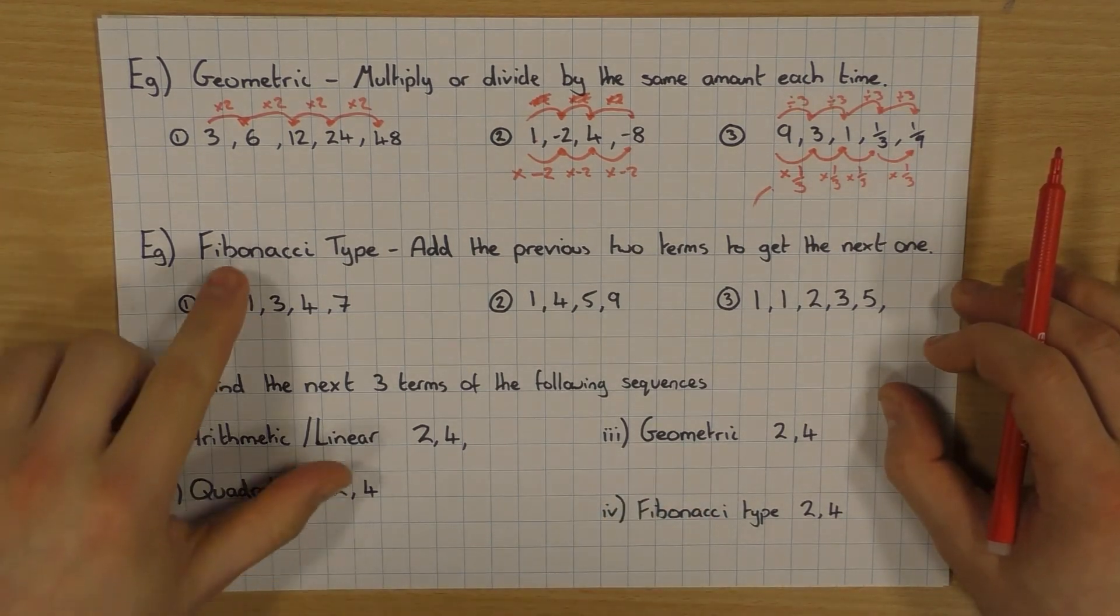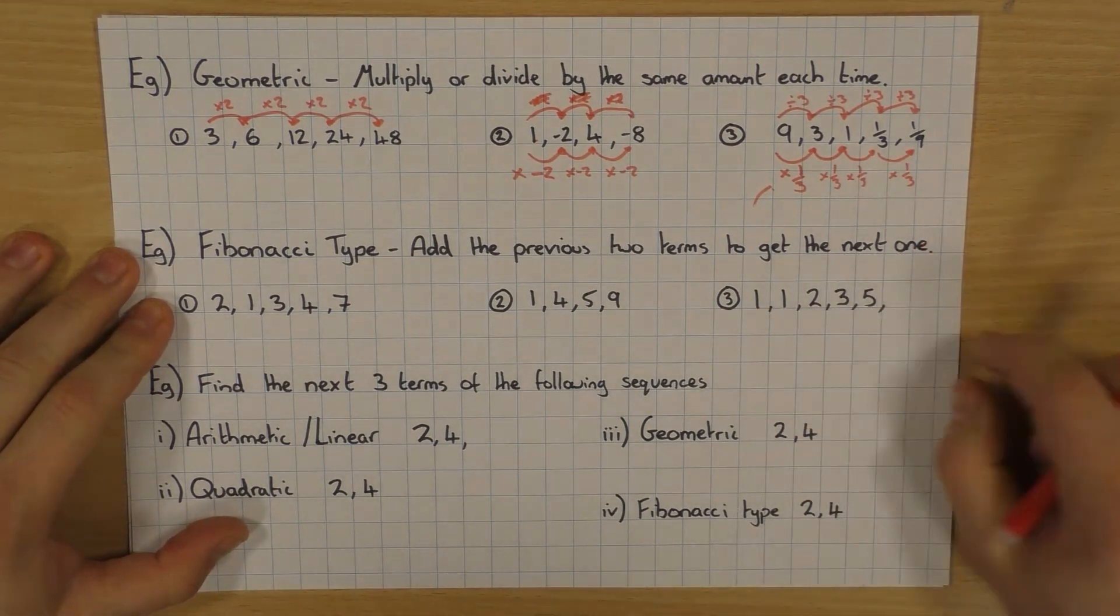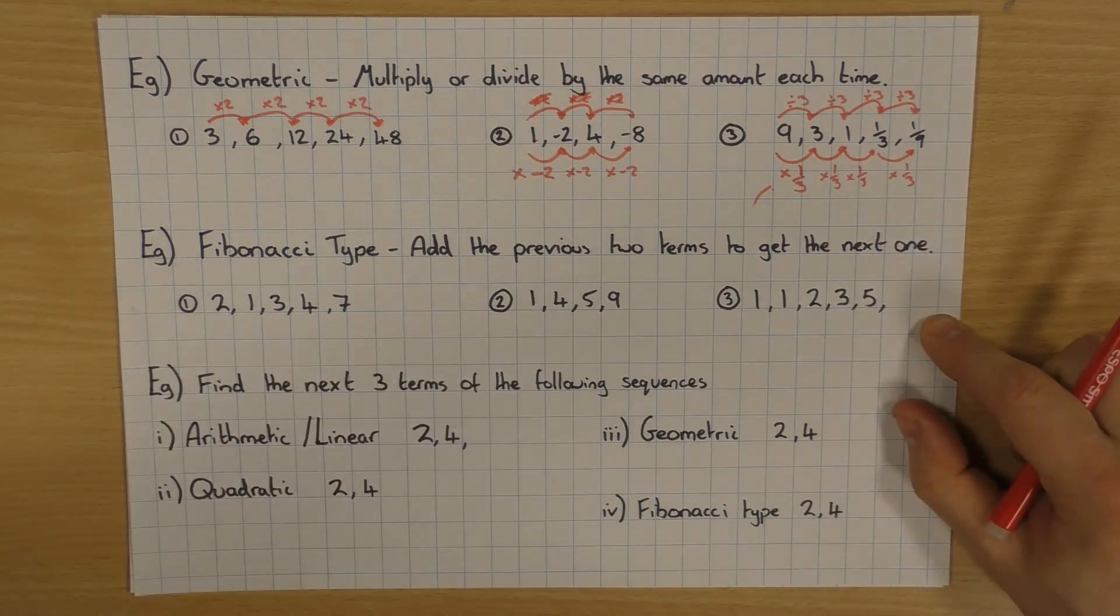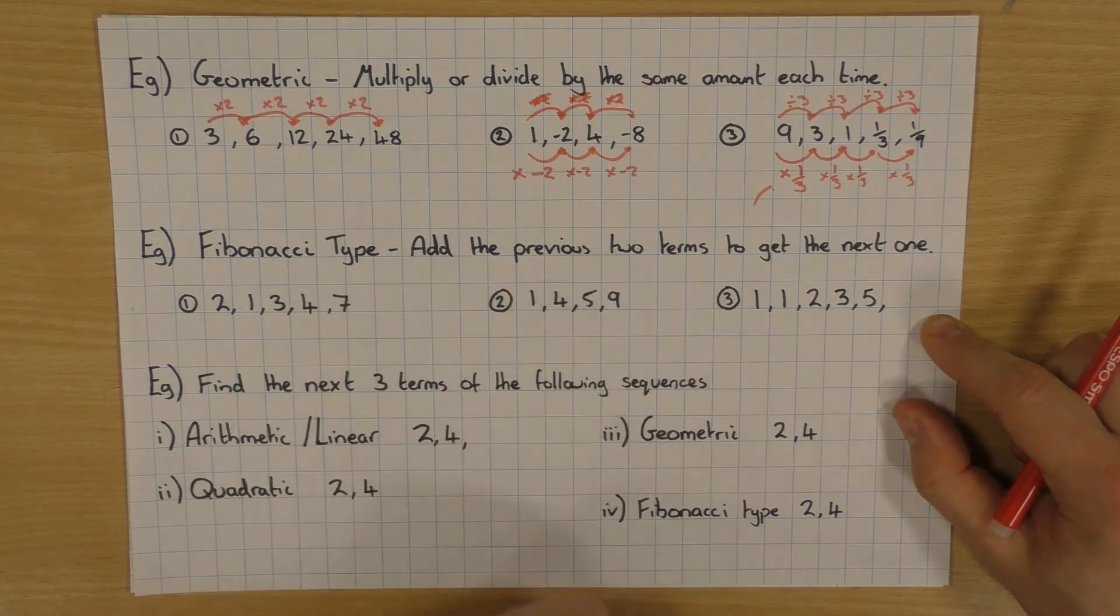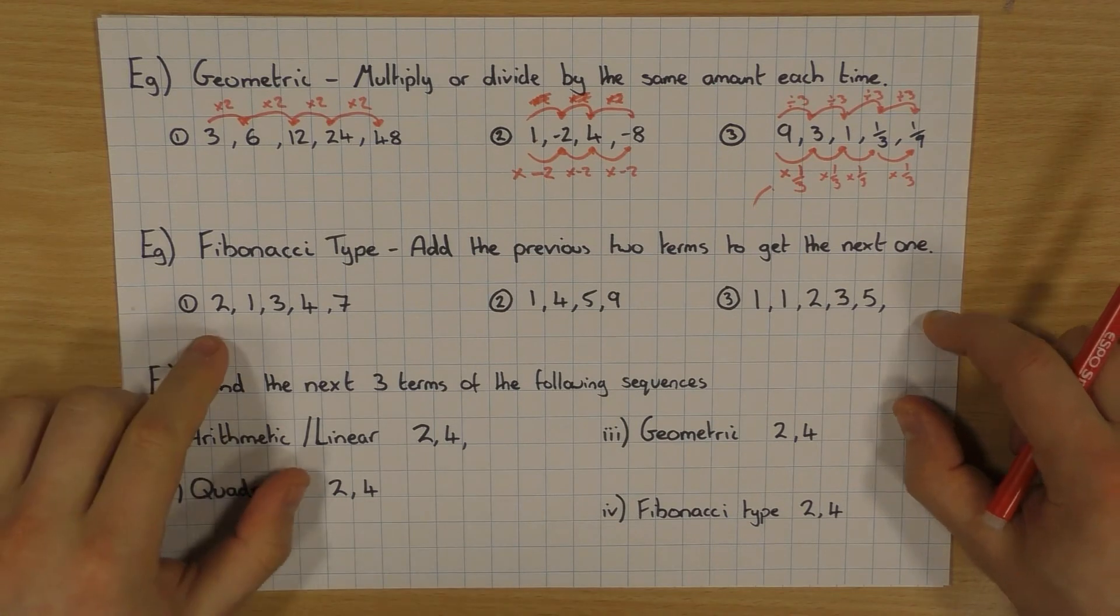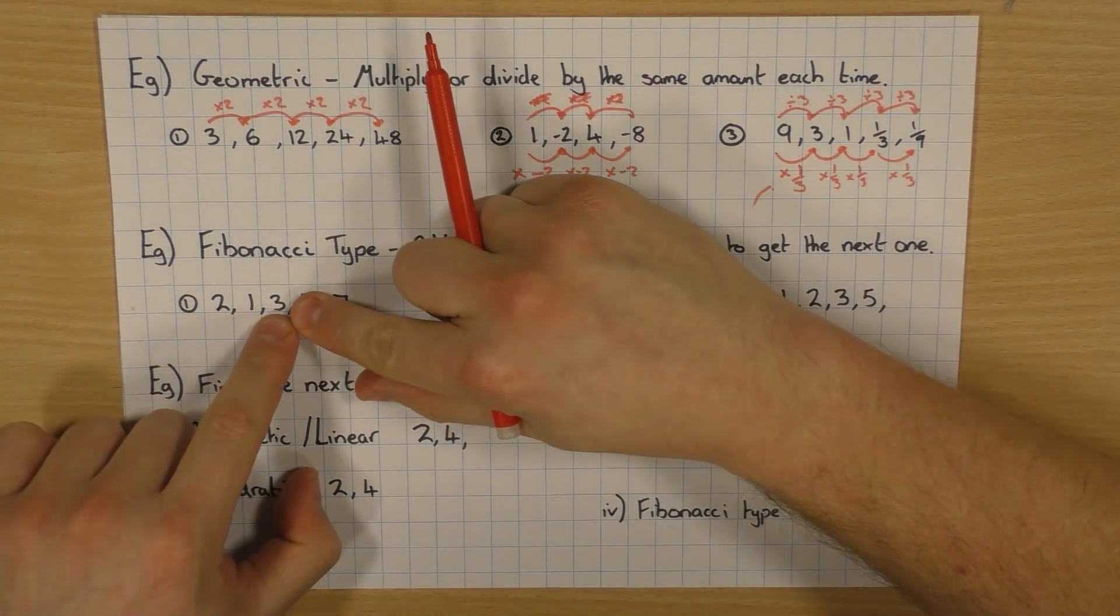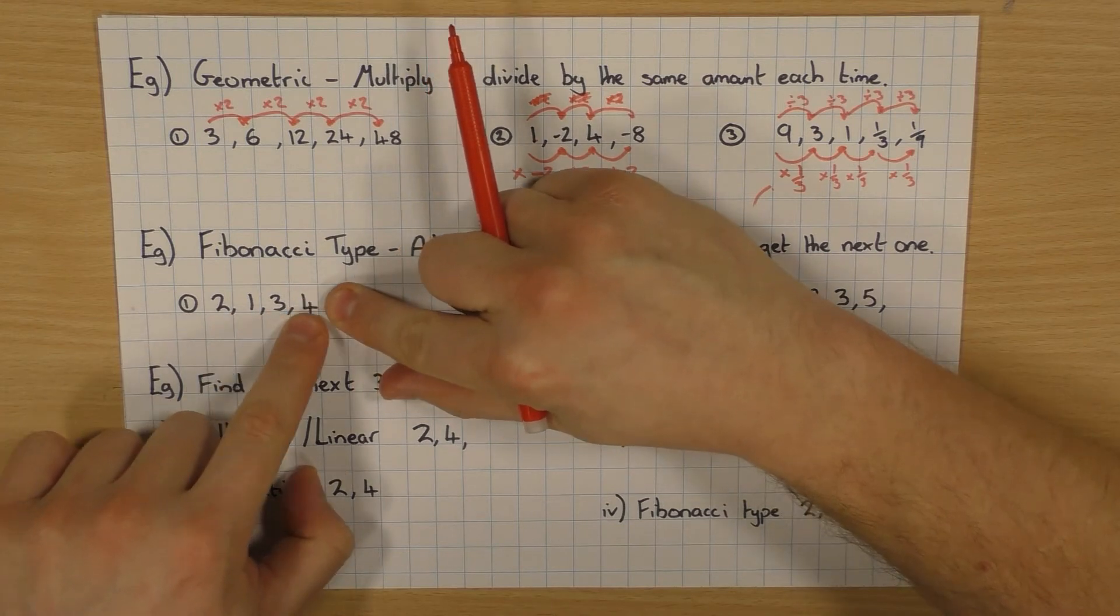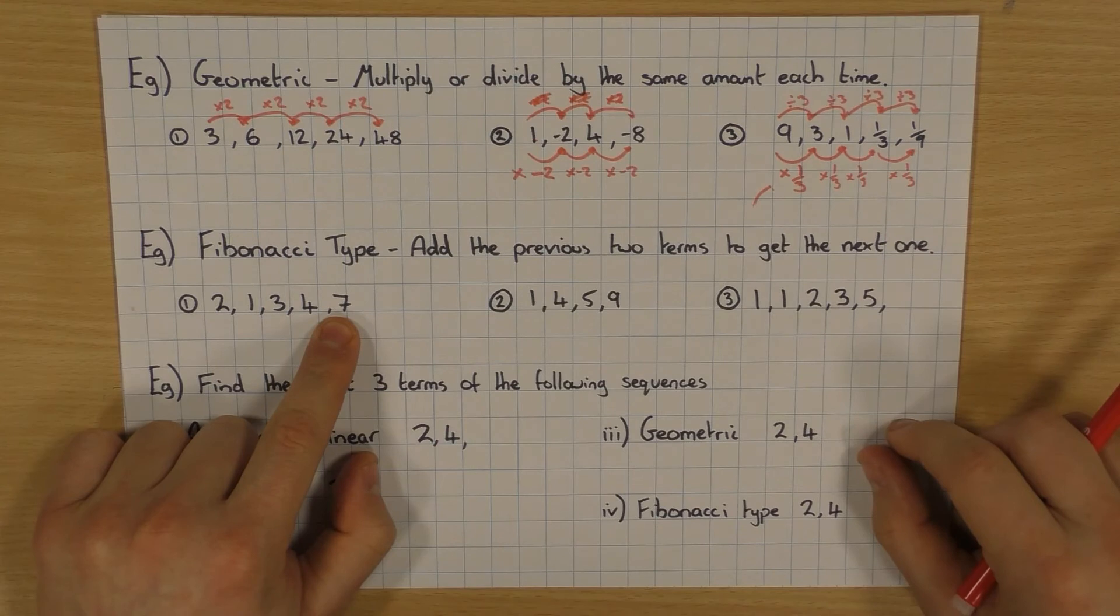And the last sequence we're going to have a look at is a Fibonacci type sequence. This is very famous. In fact, the actual sequence is over here. We'll have a look at a couple of examples. And a Fibonacci sequence is when you add the previous two terms to get the next one. So if we look here, 2 add 1 gives us 3. 1 add 3 gives us 4. 3 add 4 gives us 7. So I'm just adding the previous two to get the next one.